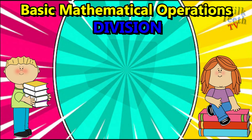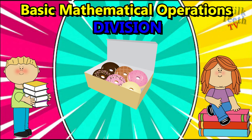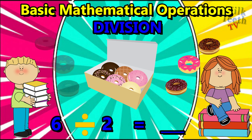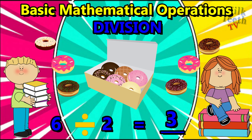So we have a box with six donuts and two children, so we need to divide six donuts among two children — that is six divided by two. We shall give three donuts to one child and three donuts to the other. So six divided by two equals three — each child would get three donuts.